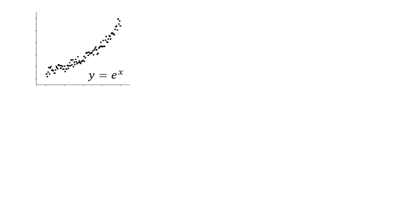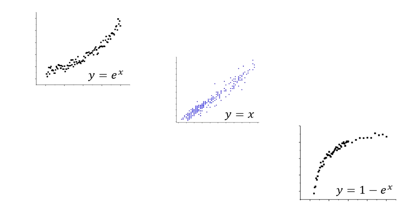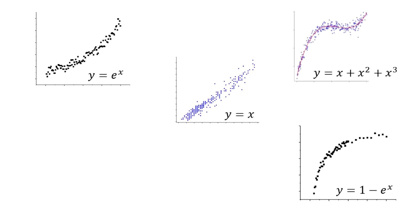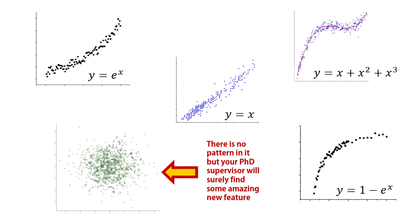For example, this scatter plot suggests an exponential relationship. This one shows a linear relationship. This one is a 1 minus e to the power x relationship. This one is polynomial — really scary. And finally this one: there is no pattern really, but your PhD supervisor will surely find some amazing new feature in it.